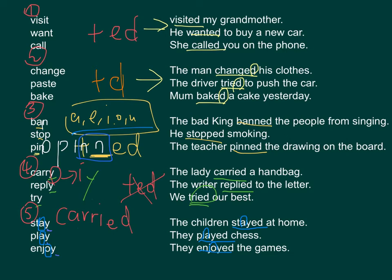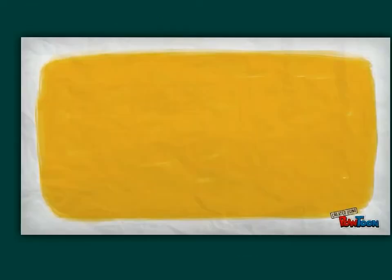So I hope you understand the five rules of making a verb into past tense. If you understand better, I think this video is helpful for you. So let's see.